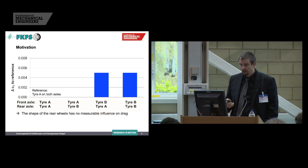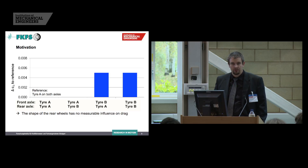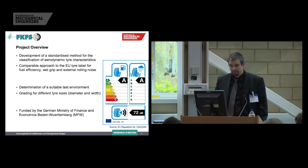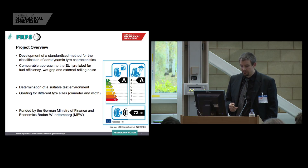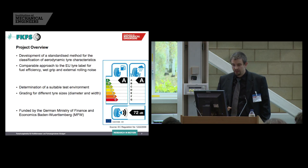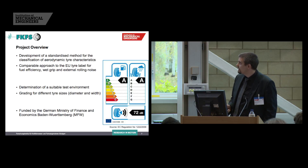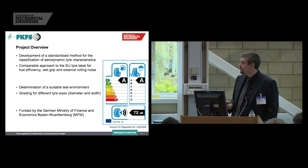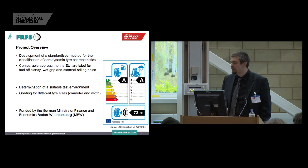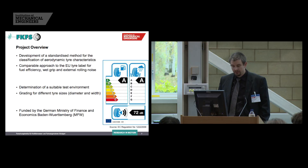So if we want to optimize the aerodynamic properties of a tire, we can focus on one vehicle and on the front axle. With this in mind, we asked ourselves: is it possible to characterize the aerodynamic properties of a tire independent of the vehicle shape? We started a project funded by the German Ministry of Finance and Economics, Baden-Württemberg. The goal is to develop a standardized method for the classification of aerodynamic tire characteristics — comparable to the existing EU tire label, where fuel efficiency, wet grip, and external rolling noise are characterized for each tire.